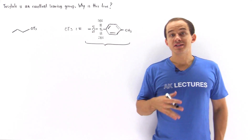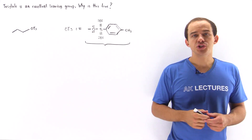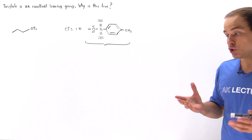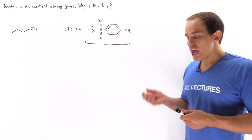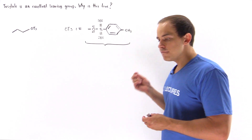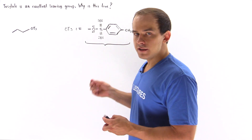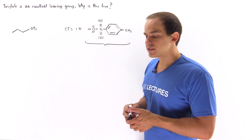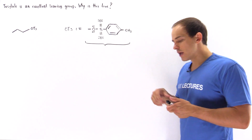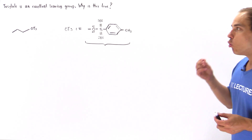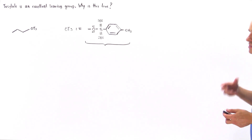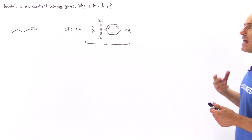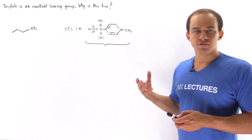The tosylate group is often used in organic chemistry because it is a very good leaving group. The question we briefly want to discuss in this lecture is: what makes the tosylate group such an excellent leaving group?